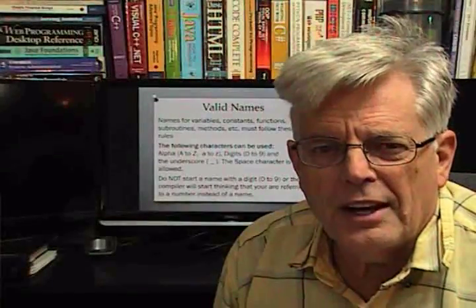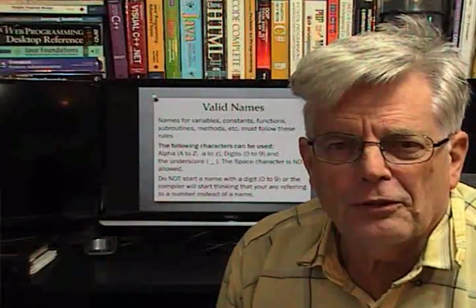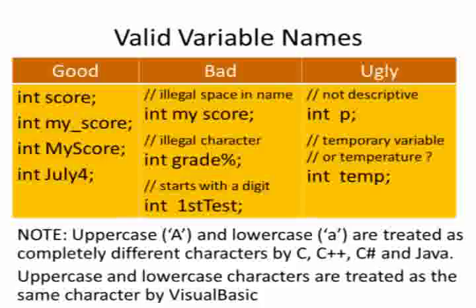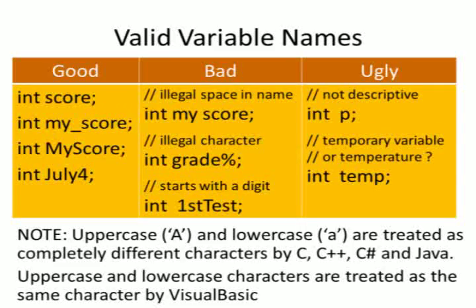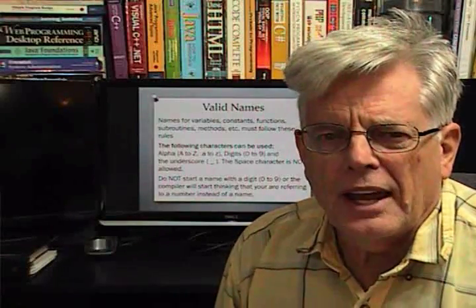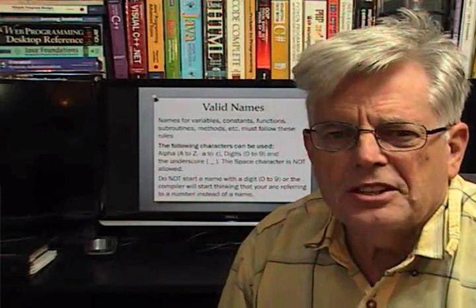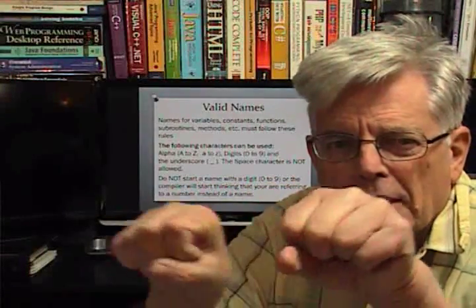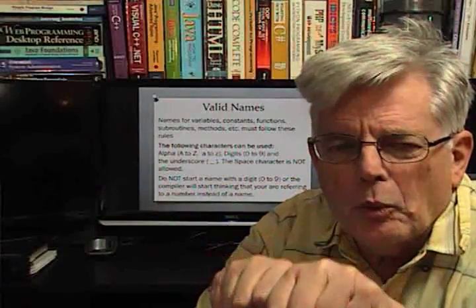The next thing I want to cover is valid names. You can choose how to name your objects, functions, variables, and constants. There are only a few rules you have to follow. First, you cannot have any spaces in your name. You can use the underscore so that it's sort of like a space, but as far as the computer is concerned, it's still one solid name. You can also capitalize the first letter in each English word and put them all together.